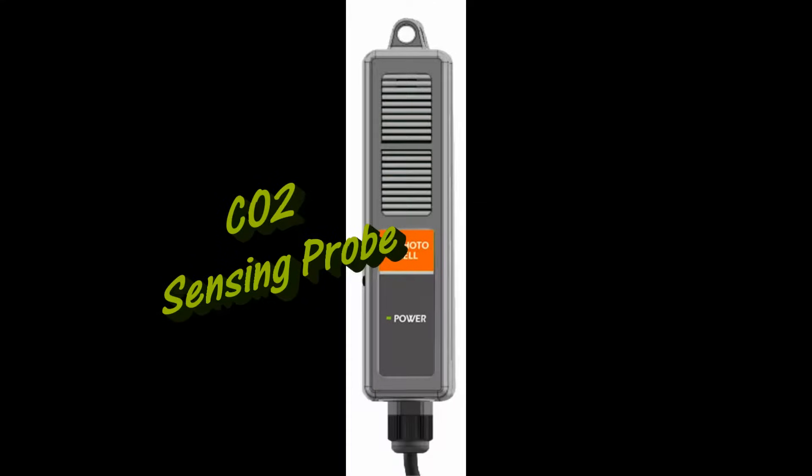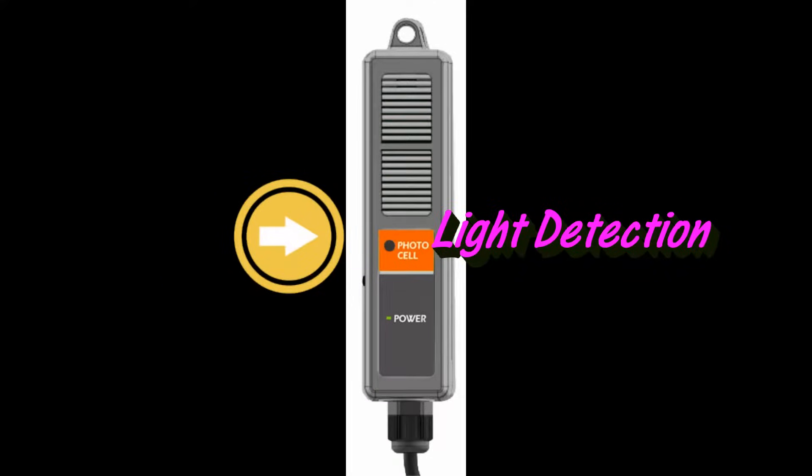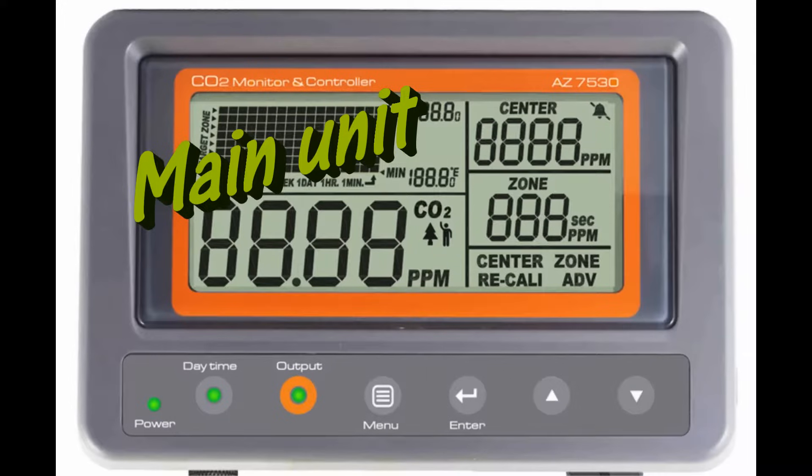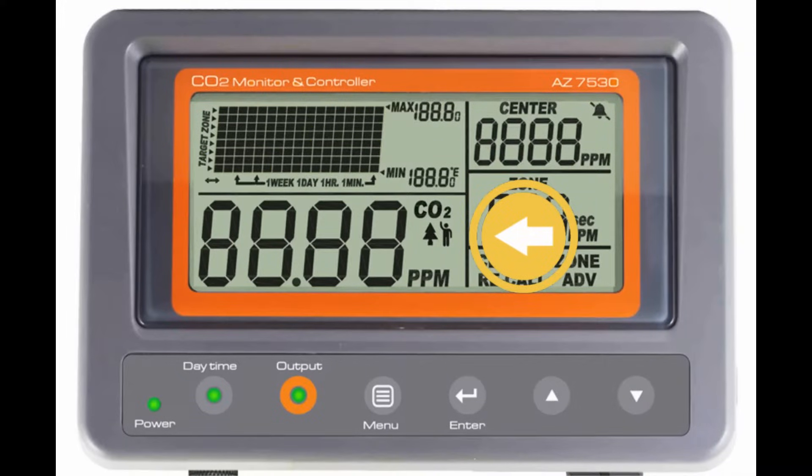CO2 sensing probe could also detect light intensity. The controlling function is disabled while detected light is weak in plant mode. The main unit is default as plant mode.